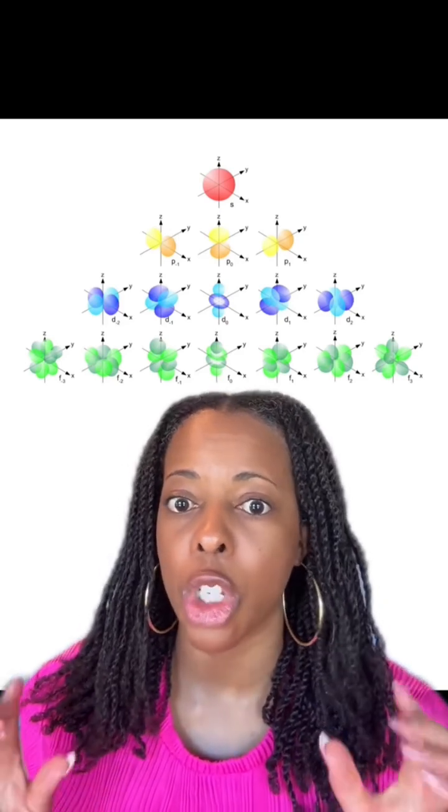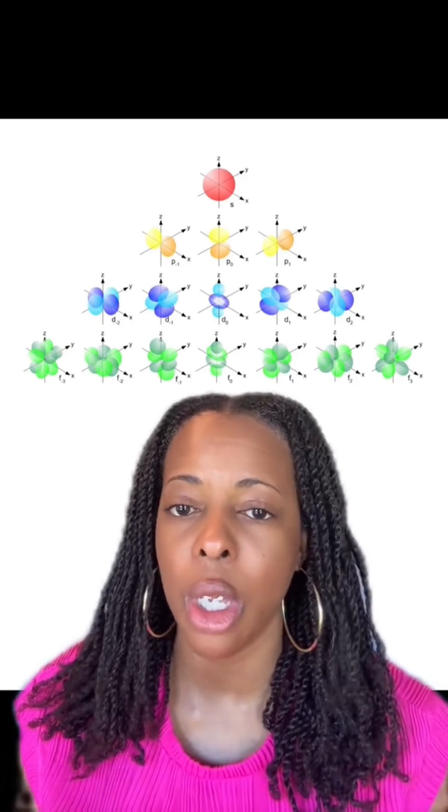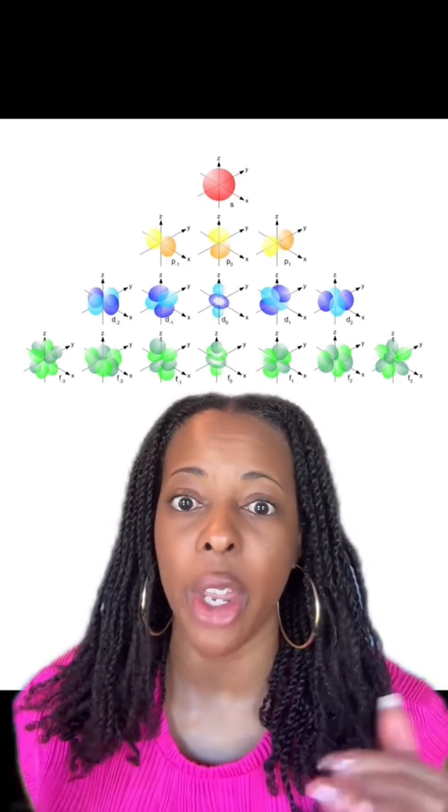You have your s orbitals, which are your smallest, lowest energy orbitals. You have p orbitals, which are the next largest. Then you have your d orbitals, and then you have your f orbitals.